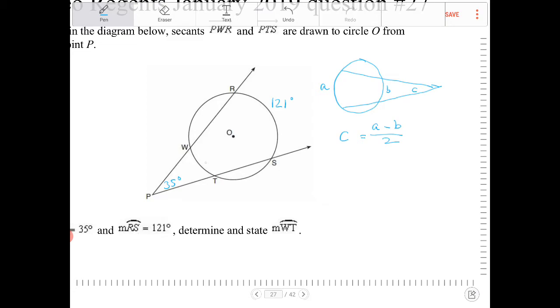So to answer this question, let's call WT here, X. So I can do 121 minus X, divide by 2. It will equal to 35.